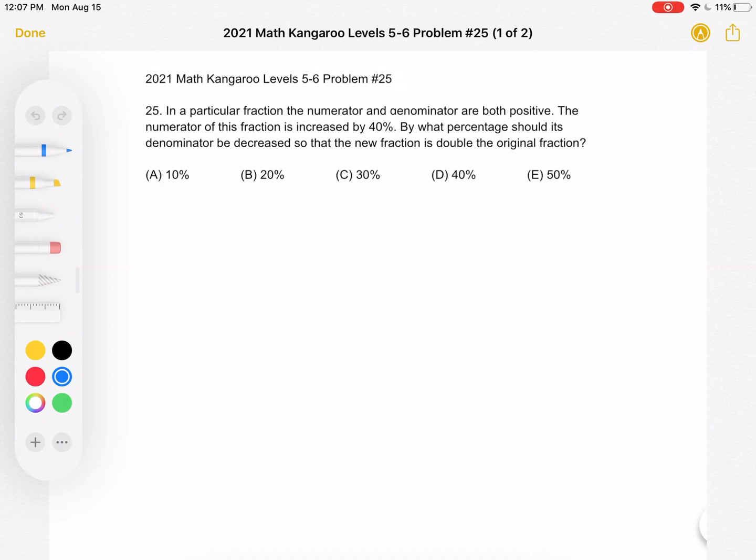In a particular fraction, the numerator and denominator are both positive. The numerator of this fraction is increased by 40%. By what percentage should its denominator be decreased so that the new fraction is double the original fraction?